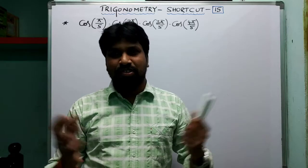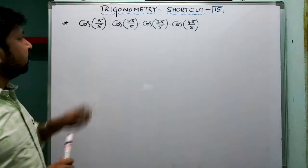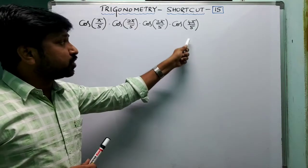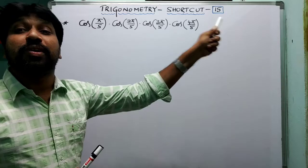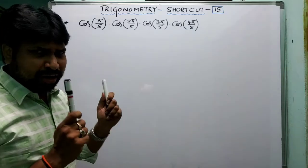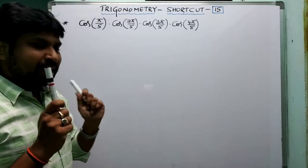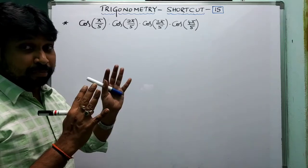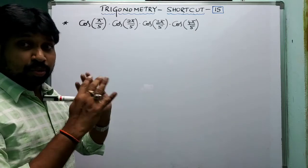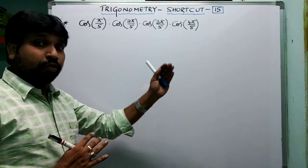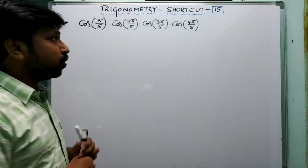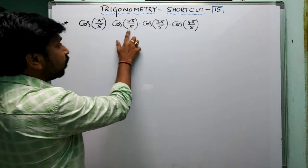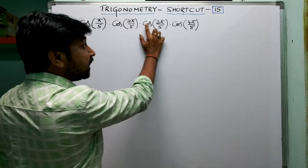Let's start our session. The question is: cos(π/n) · cos(2π/n) · cos(3π/n) · cos(4π/n) = ? This looks like shortcut number 14, right? Yes, it almost looks like shortcut number 14, but it is not. You have to know the difference between shortcut number 14 and shortcut number 15.